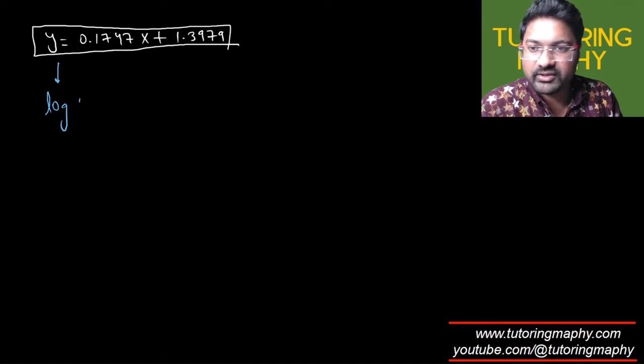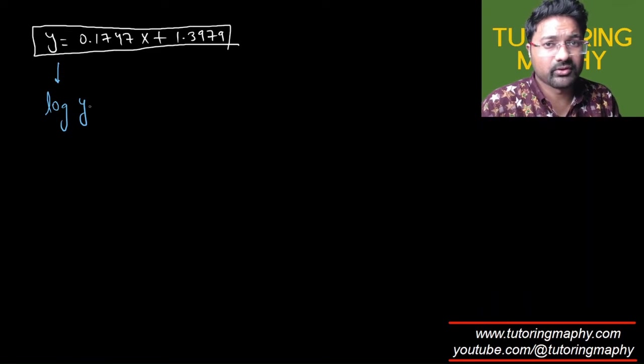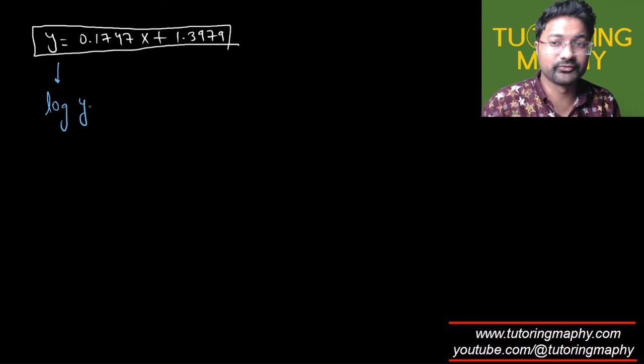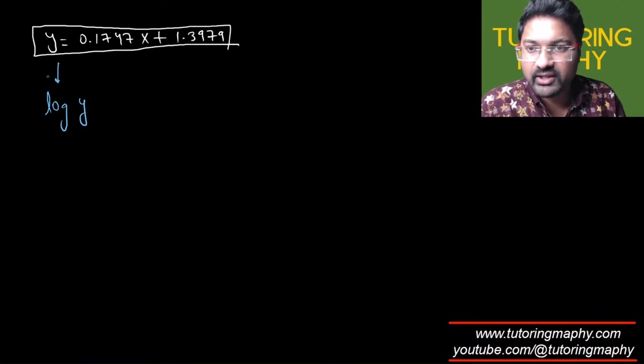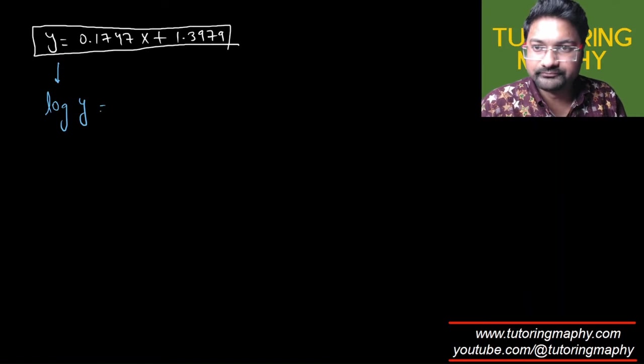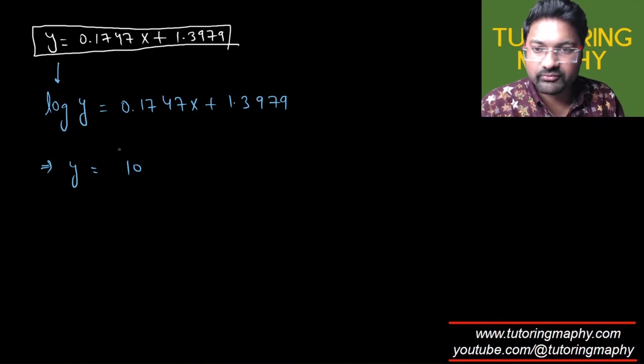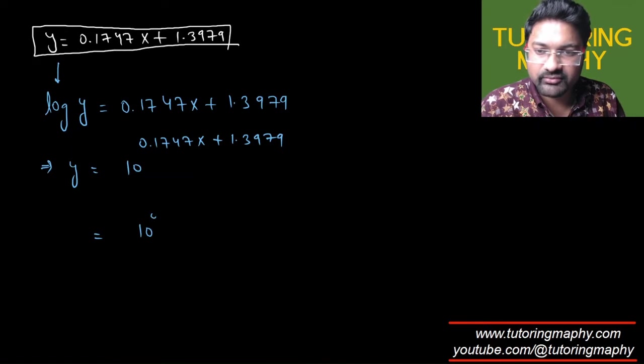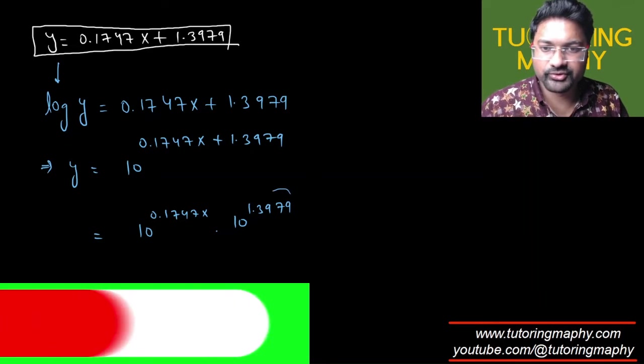So replace y with log of y, and base 10 of course, log of y, because originally y was not y, right? Y was log of y. If you are confused with this, please see the part 2 video. I've explained this. So replace y with log y, and the rest of the things will just remain as it is. And all you have to do now is take antilog on both the sides. So it's going to look like 10 raised to, you know, 10 raised to this complete thing on the power.